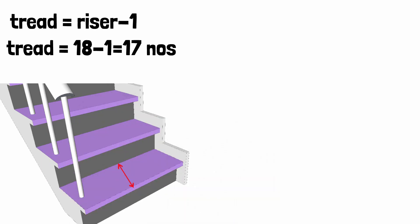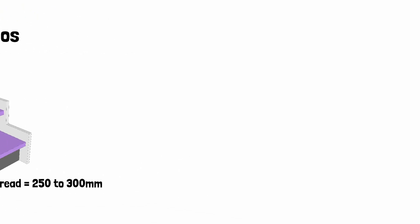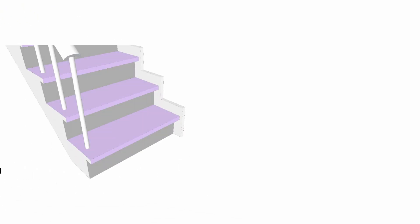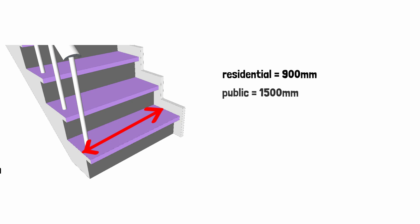Tread dimension is usually from 250 to 300 mm, and it should not be less than 250 mm. The width of the tread for residential buildings should not be less than 900 mm, and for public buildings it should have at least 1500 mm width.